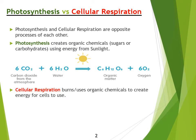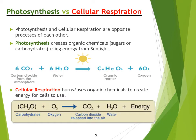Cellular respiration is basically the process of burning or using these organic chemicals or sugars to create energy for the cells to use. So that's our chemical equation: the sugars or carbohydrates combined with oxygen will create energy, and at the same time it releases carbon dioxide and water.